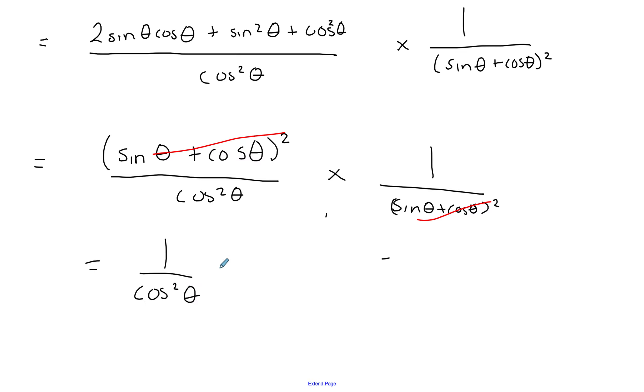So this will cancel out with this, and I'm left with 1/cos²𝜃. Write it in simplest form and that will be sec²𝜃. So hopefully this was clear - it's just knowing the tricks here and there, simplifying as much as possible, and just using as much algebra as you could.